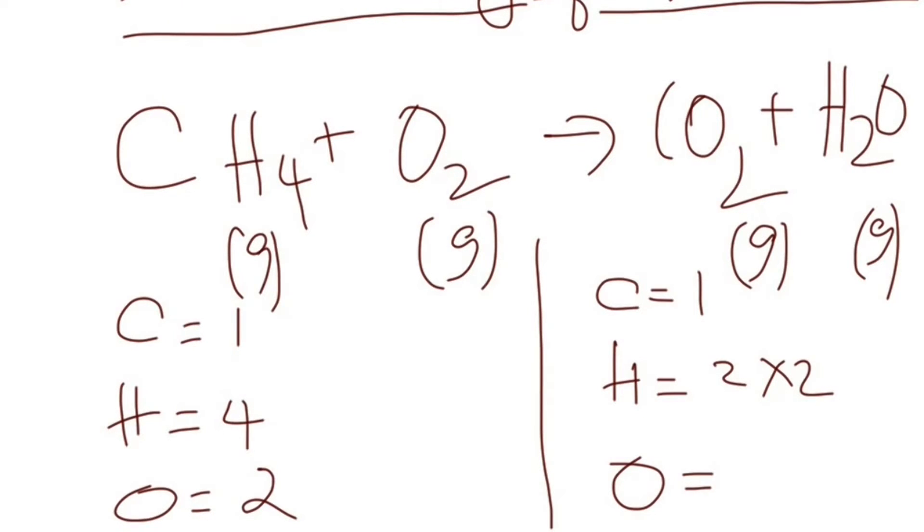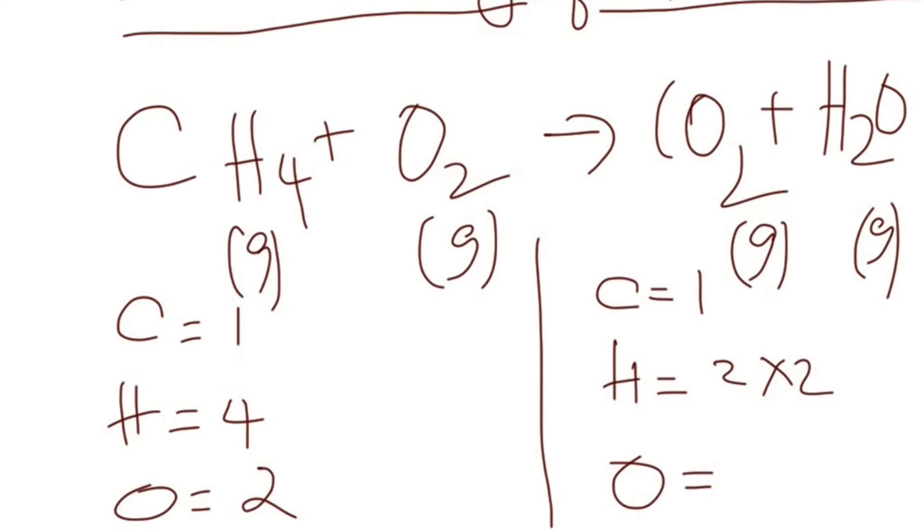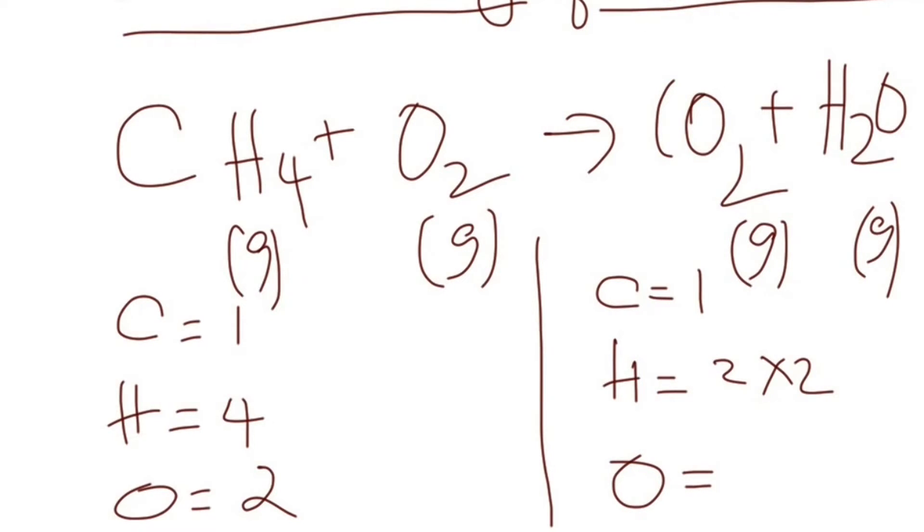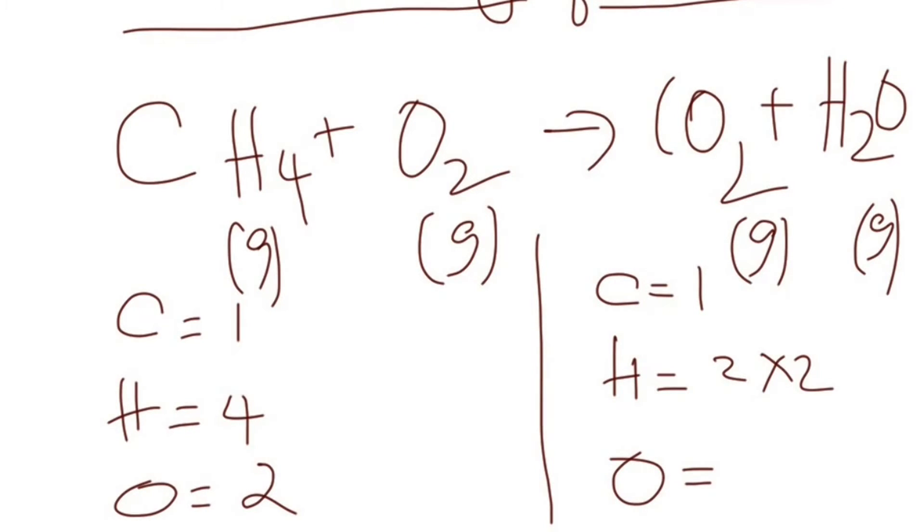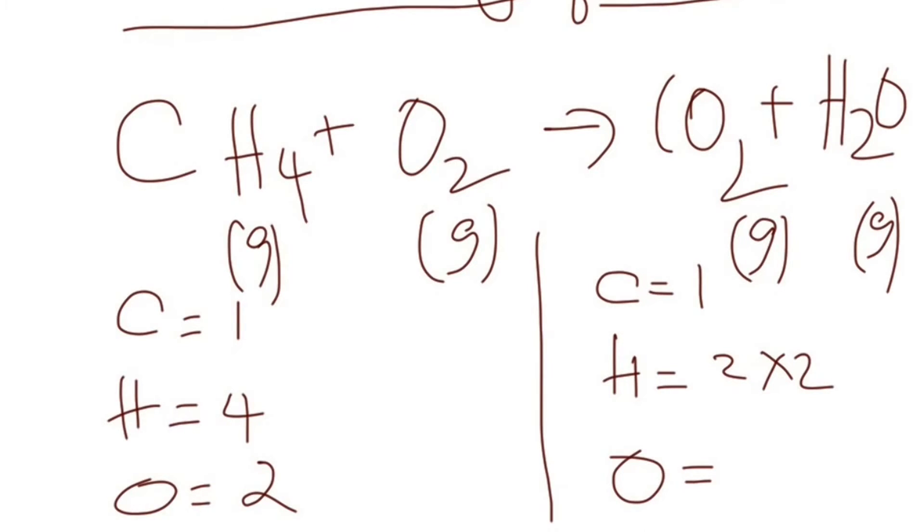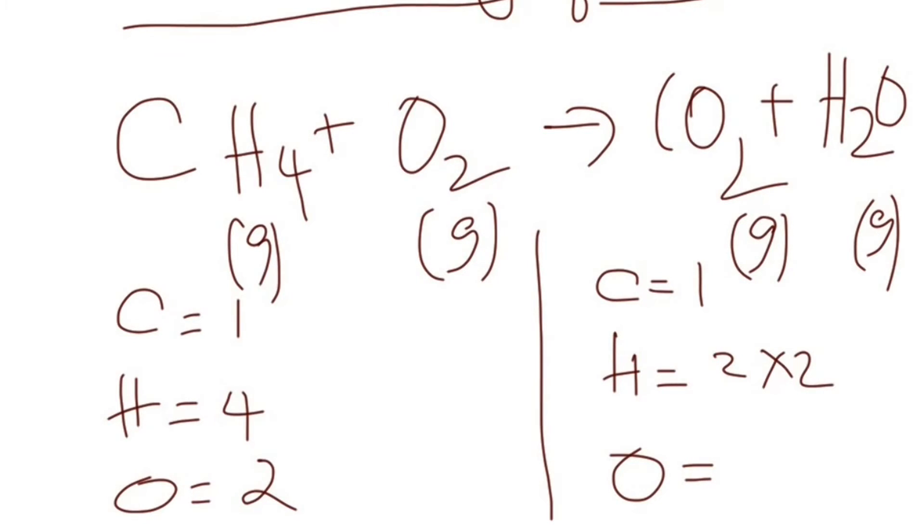But the question is, which element do we balance first? The simple rule is, if there are elements that form more than one compound in the product side, that should be balanced last. So in this case, if you look at oxygen, it forms carbon dioxide and water. Both the products have oxygen, therefore balance oxygen last.